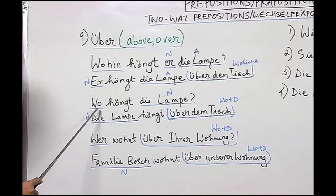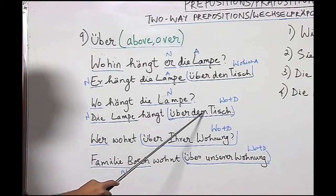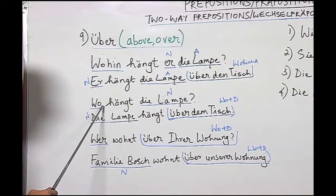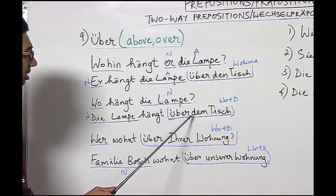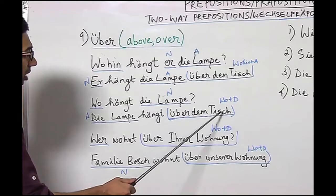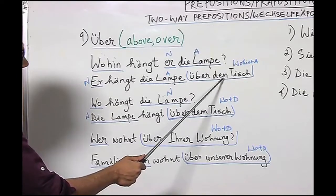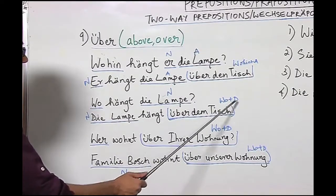Now let us look at: Wo hängt die Lampe? Die Lampe hängt über dem Tisch. Here 'hängen' is the dative verb because it is with the wo question, which is dative. So the answer is also in dative: Die Lampe hängt über dem Tisch. 'Über' is the dative preposition; since it is dative, the article 'der' for Tisch becomes 'dem'. In accusative it was 'den Tisch', and in dative it is 'dem Tisch'. With this we get the answer for the wo question in dative.